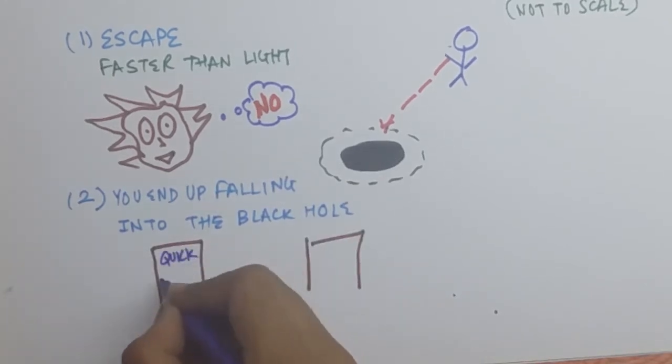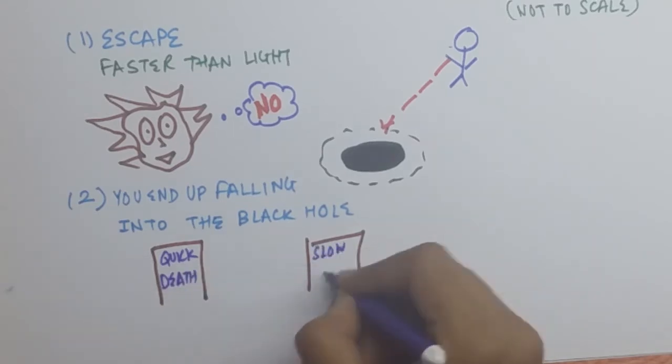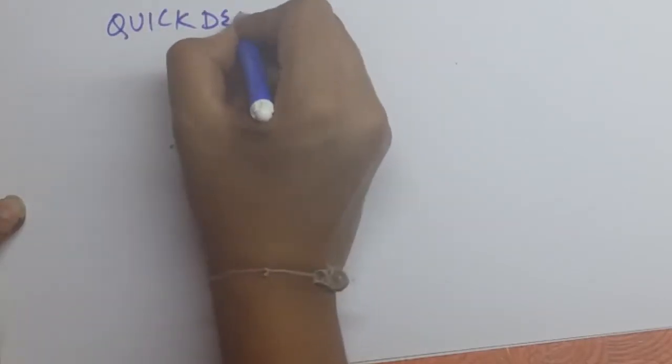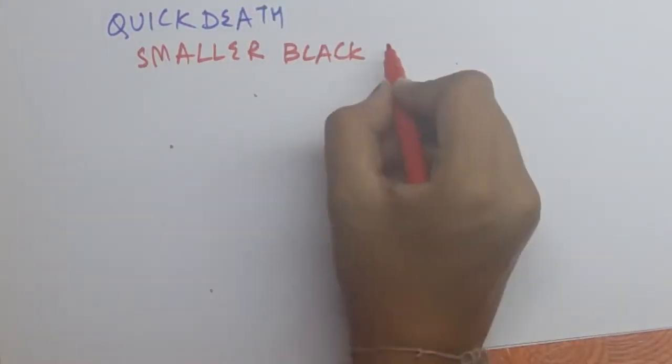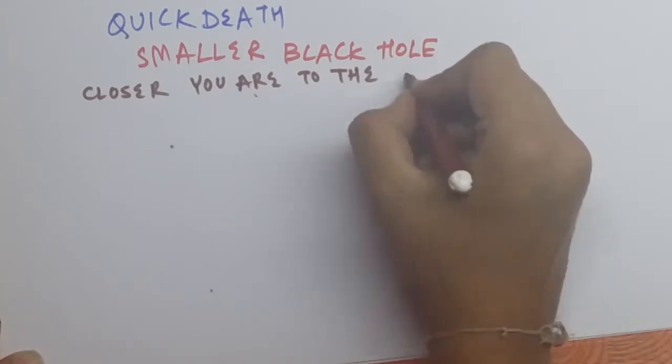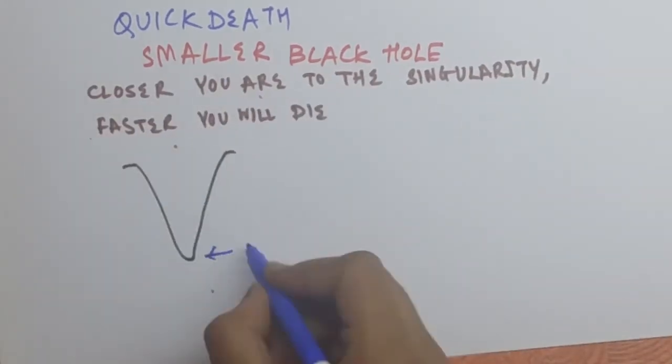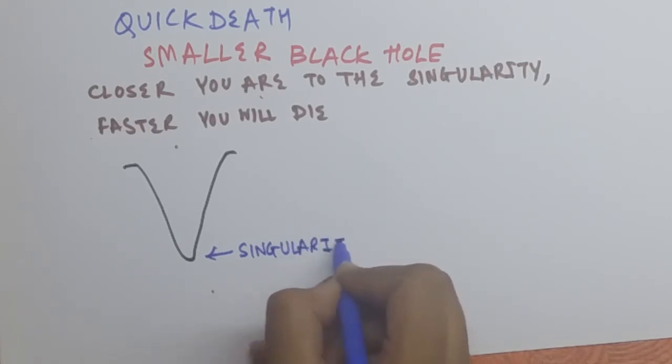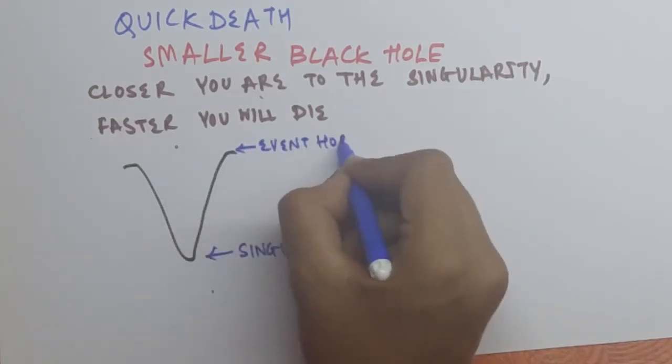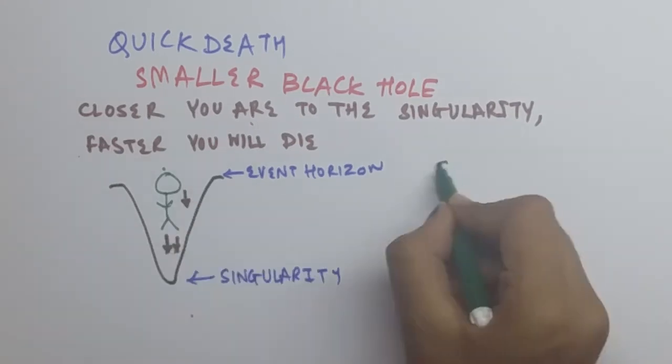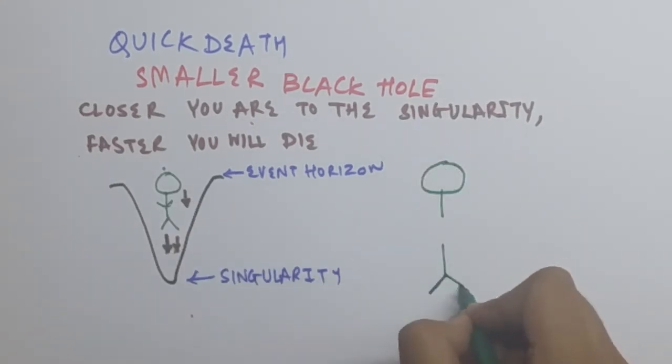Either you go for a quick death or a slow painful one. Let's say a quick death. You need to hope and pray for a smaller black hole, because the closer you are to the singularity, the faster you're going to die. When you are inside this black hole, the upper part of your body will experience less gravitational force compared to the lower part.